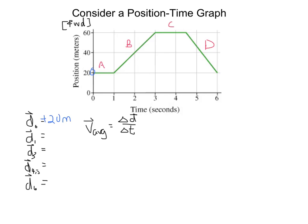And then position 1 is here, so that's still positive 20 meters. And position 3 is up here, that's positive 60 meters. And 4.5 is again positive 60 meters. And finally position 6, we're back to positive 20 meters. So we can calculate the average velocity for the entire trip.